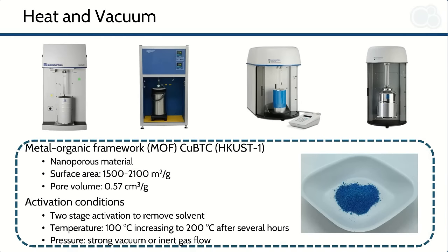A common method of activating samples is applying heat and vacuum. One example of a material where you might use heat and vacuum is something like a metal-organic framework, or MOF — in this case copper BTC. Copper BTC is a nanoporous material with a large surface area as well as large pore volume, and typically it will be activated using a two-stage activation: beginning by heating at 100°C to remove any water trapped within the material, then further increasing to 200°C to remove solvents such as DMF. Typically you'll also use strong vacuum or inert gas flow to ensure removal of adsorbed species.